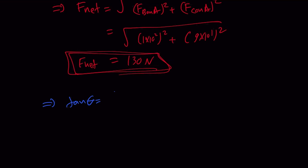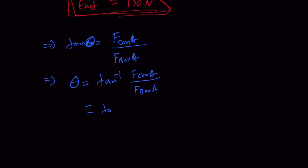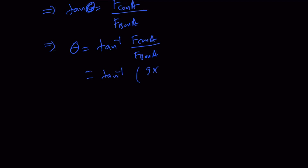Replacing the values: θ = tan⁻¹(9×10¹ / 1×10²), which is tan⁻¹(90/100). The values are expressed in scientific notation for systematic physics application, though it's not strictly required as long as you get the correct answer. Entering this into the calculator gives θ equal to 42 degrees.